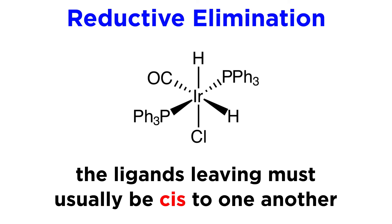As we would expect, just in the way that oxidative addition leaves two new ligands cis to one another, the ligands that leave via reductive elimination must usually be cis to one another in order for the new bond to form.